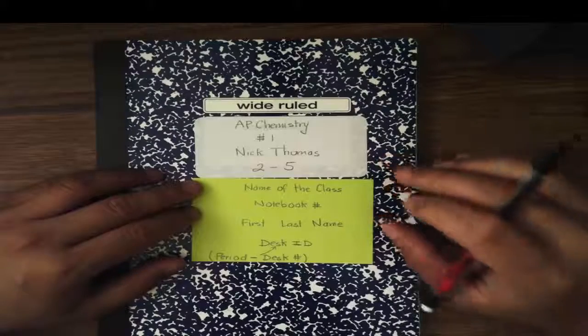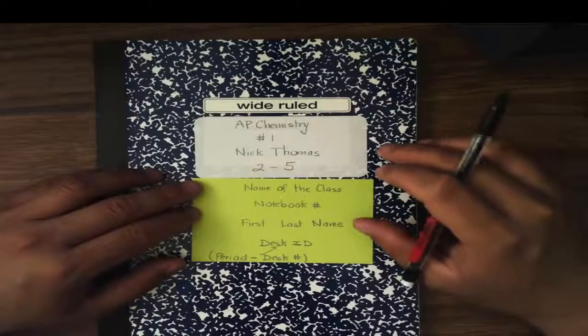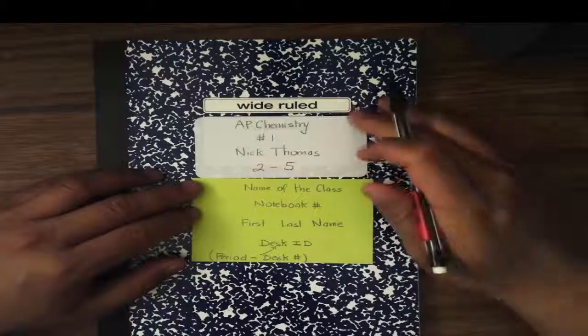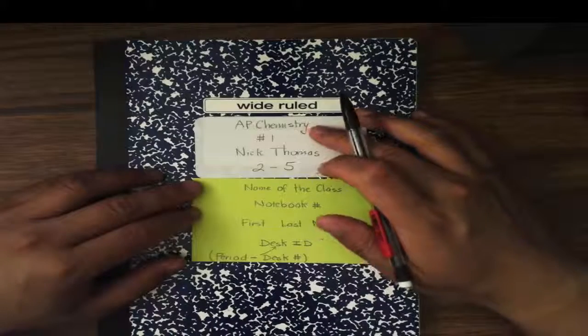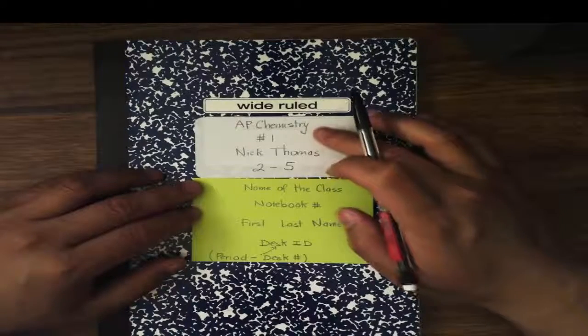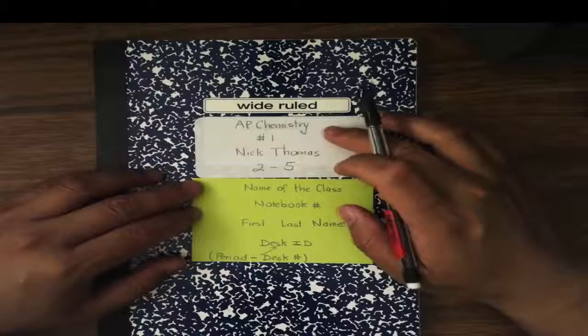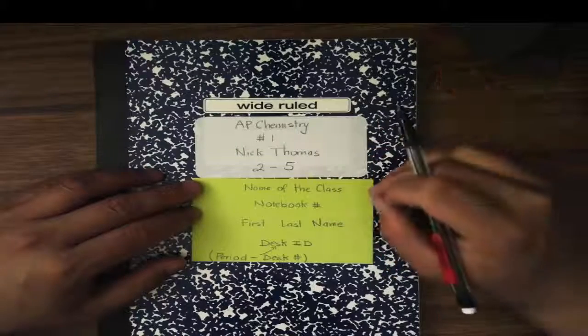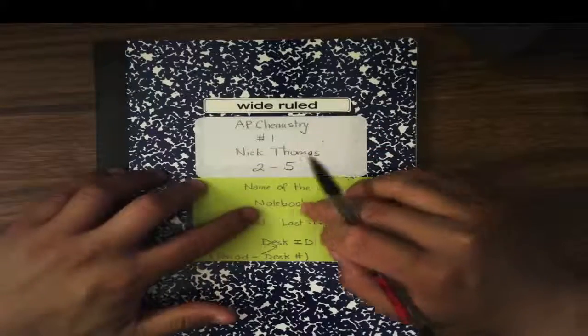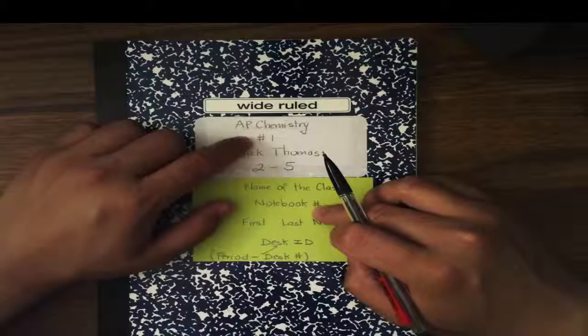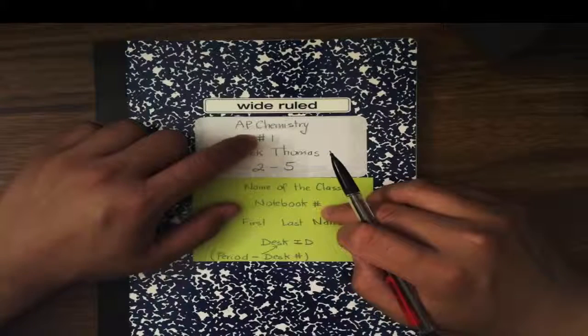In this lesson, we are going to learn about the structure of our class notebook. First of all, if we look at the cover, we have the title of the class, which is the name of the class, AP Chemistry. So I'm using AP Chemistry notebook as an example. Right below, we have the notebook number, that is, this is the first notebook. So I have notebook number 1.